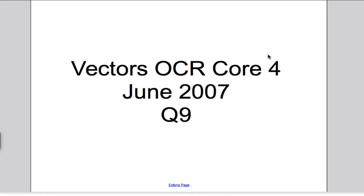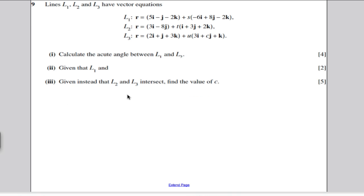Hi there, in the following video I will answer for you the OCR June 2007 question 9. It's a question on vectors, I'm doing a series on vectors, so let's go straight on and see the question. It's question 9 here and it's for a total of 11 marks, so it's a nice way to end the paper actually.